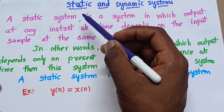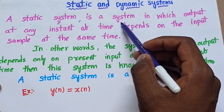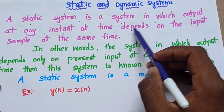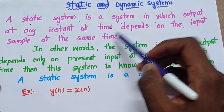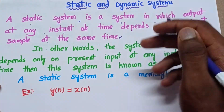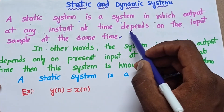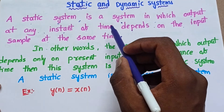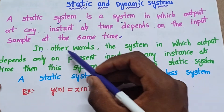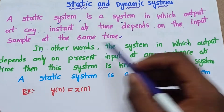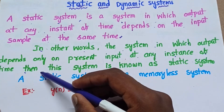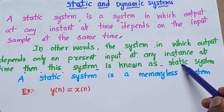First let's see what is a static system. A static system is a system in which the output at any instant of time depends on the input sample at the same time. That means in a static system, the output at any instance of time only depends on the input at that same instance of time. The system in which the output depends only on the present input at any instance of time is known as a static system.